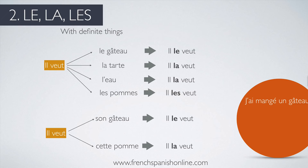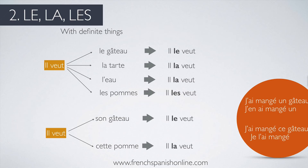Compare: j'ai mangé un gâteau — to replace un gâteau you say j'en ai mangé un. But j'ai mangé ce gâteau — this cake — becomes je l'ai mangé. Because it's definite, you need the pronoun L' before the auxiliary verb starting with a vowel. So: j'ai mangé un gâteau → j'en ai mangé un; j'ai mangé ce gâteau → je l'ai mangé.